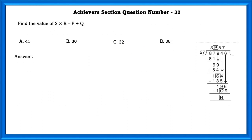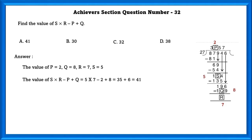Achieve section question number 32. Find the value of s × r − p + q. In the picture they have given 87,946 divided by 27. Dividing: 27 × 3 = 81, 87 − 81 = 6, bringing down 9; 27 × 2 = 54, subtracting gives 15, and that is s. Bringing down 4; 27 × 5 = 135, remainder 19, bringing down 6; 27 × 7 = 189, remainder 7. So p = 2, q = 8, r = 7, s = 5. The value of s × r − p + q is equal to 41.